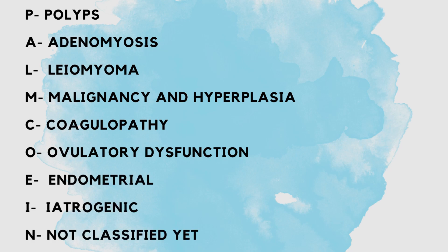C stands for coagulopathy, O for ovulatory dysfunction, E for endometrial-related causes, I for iatrogenic causes, and N stands for causes not yet classified. Each of these causes will be discussed in depth in the upcoming videos.